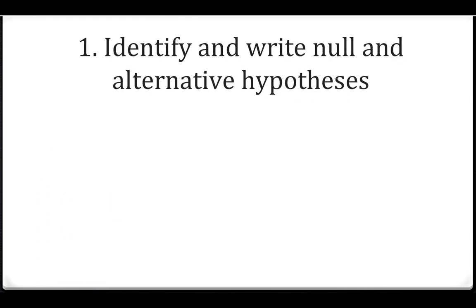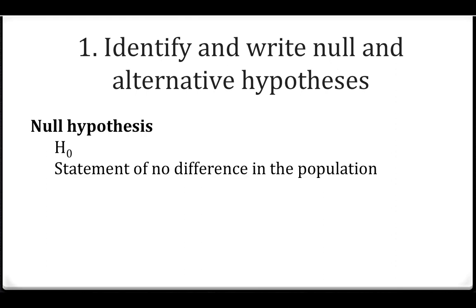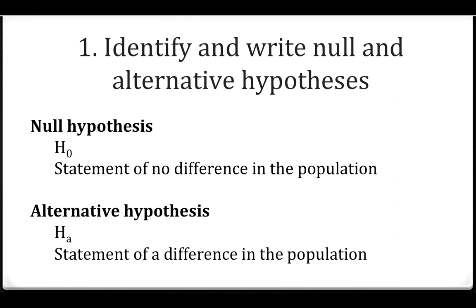The first learning objective is to identify and write null and alternative hypotheses. In any hypothesis testing procedure, you're going to have two hypotheses: the null and the alternative. The null hypothesis, written as H sub zero, is a statement of no difference in the population. The alternative hypothesis, H sub a, is a statement of a difference in the population. The hypotheses are always written in terms of population parameters, and the null always contains an equality because the null is always that there is no difference.